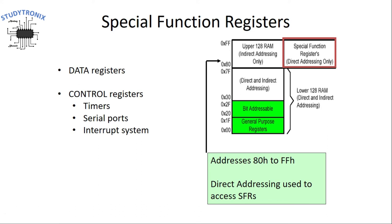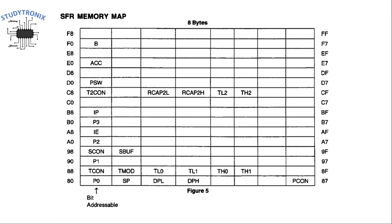The SFRs have addresses from 80 hex to FF hex. This memory map shows the different SFRs present in the 8051 — for example, the accumulator has address E0 hex and the B register has address F0 hex. All SFRs listed in the first column of the memory map are bit addressable, meaning we can access individual bits of those SFRs. The remaining SFRs are not bit addressable and require access to the entire 8 bits.